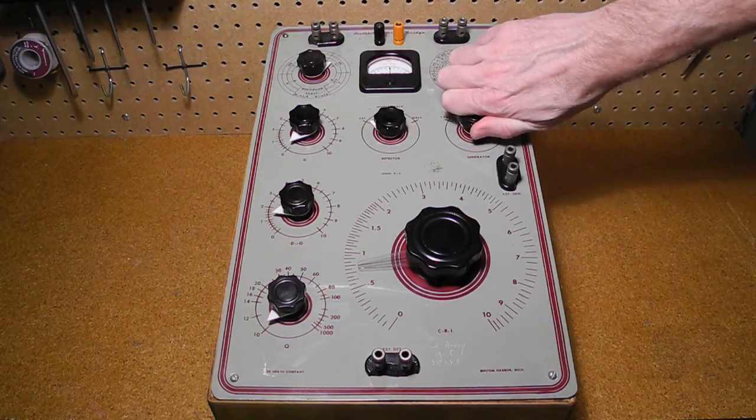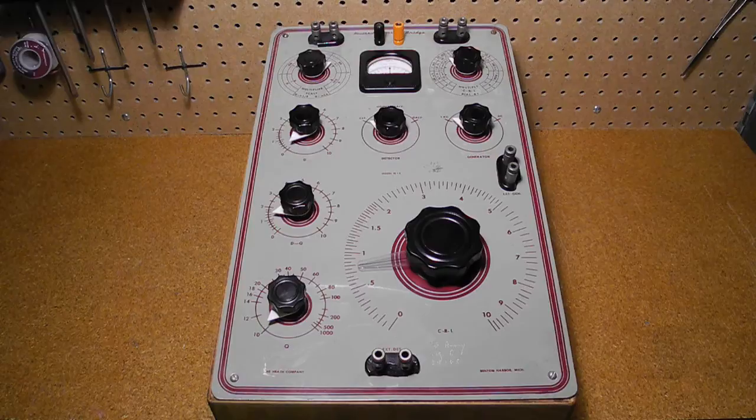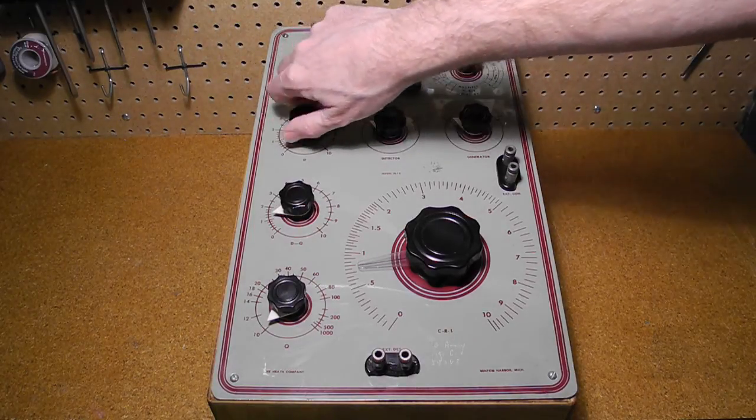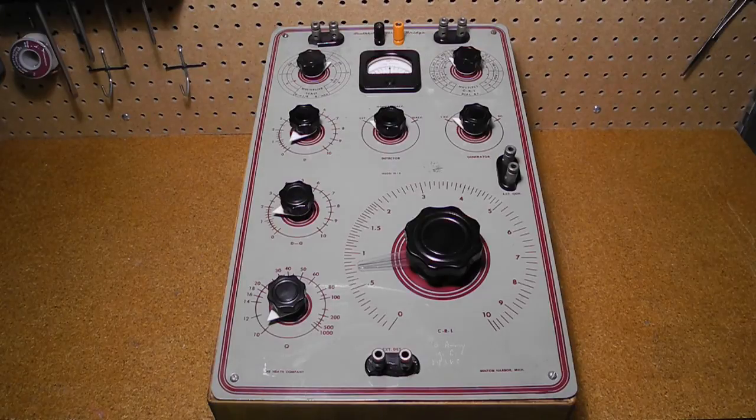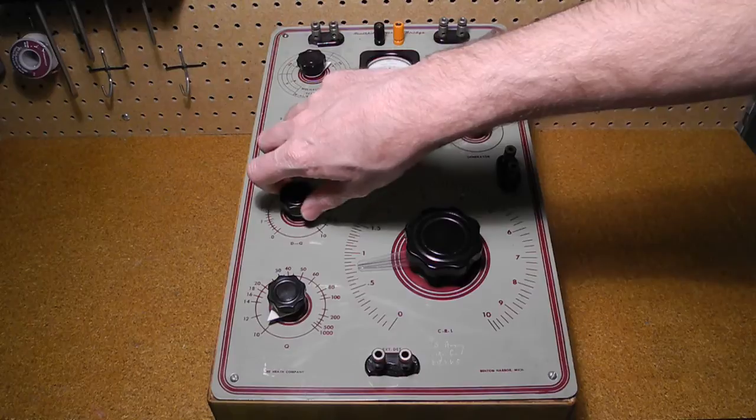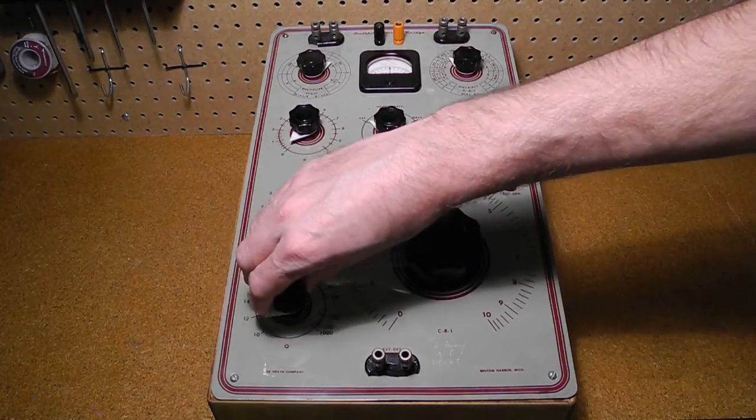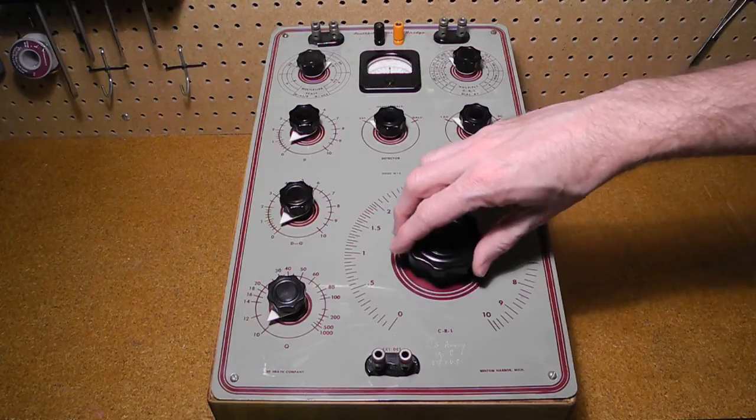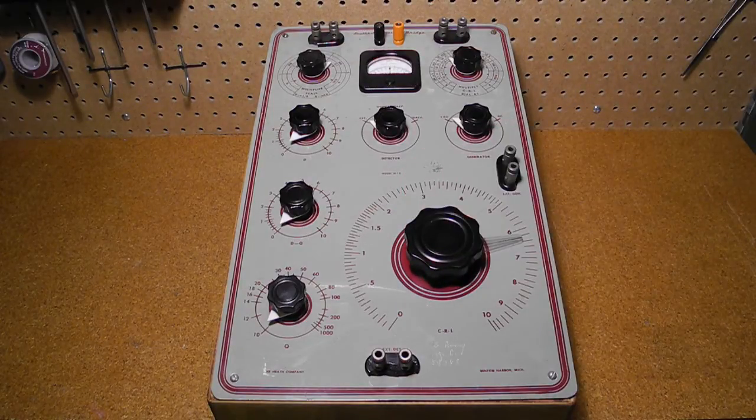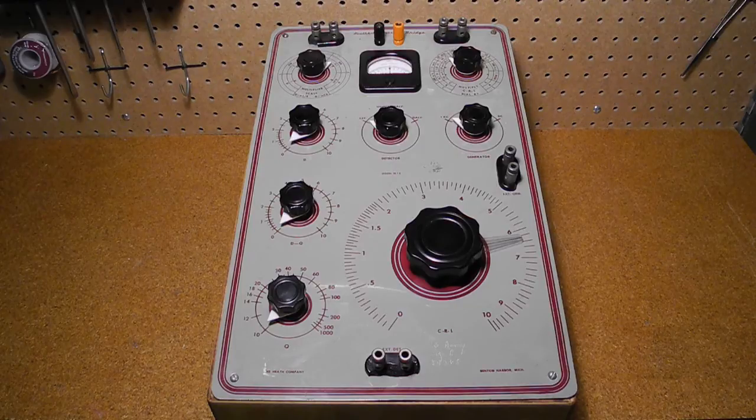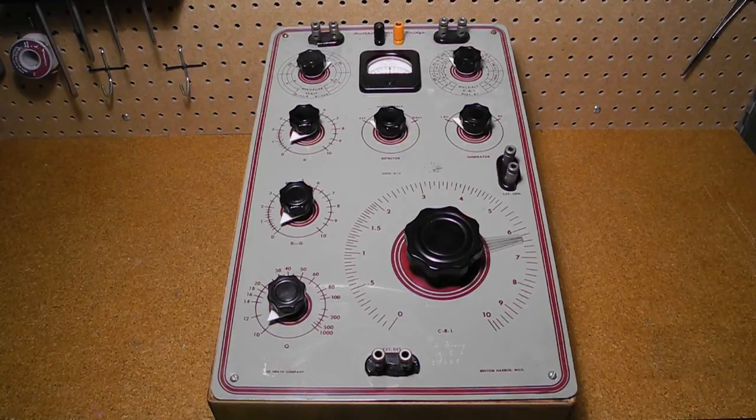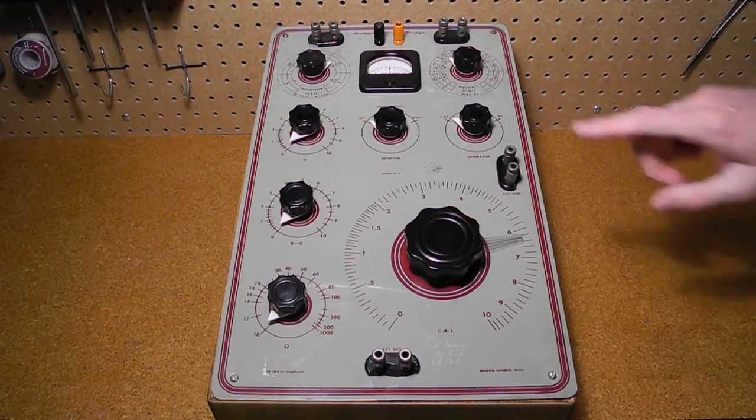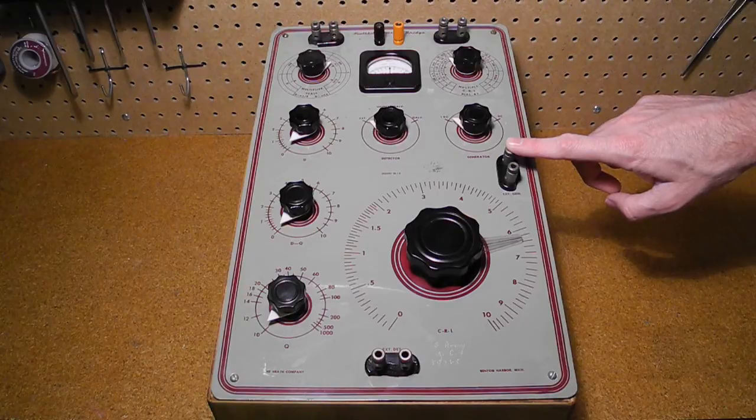To the right is the selector for the generator, either the internal 1kHz Hummer, an external generator connected to the EXT GenJax, or DC from the battery. To the left is the selector for measuring dissipation factor used when the mode is set to D. Below that is the selector for balancing dissipation factor or Q when the mode is set to DQ. And below that is the selector for balancing Q when the mode is set to Q. The large knob labeled CRL is for balancing the bridge when measuring capacitance, resistance, and inductance. The component value is read from this dial, so it's made quite large. The jacks at the bottom are for connecting an external detector for AC measurements, typically a set of sensitive high impedance headphones. To the right is a connector for an external signal generator, which I'll describe later during the demo.